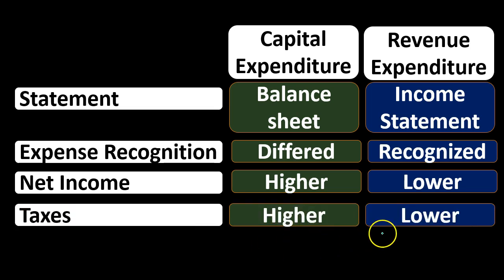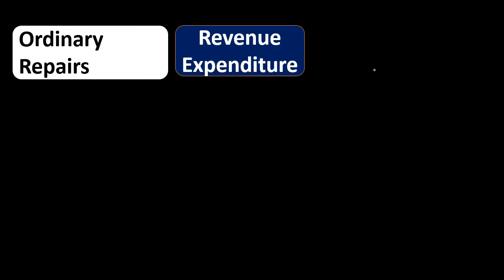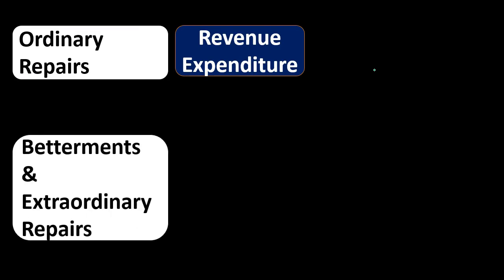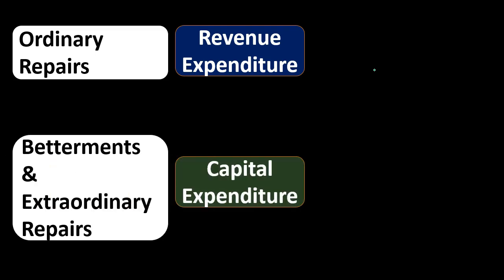The revenue expenditure results in lower taxes at the point in time the expenditure is made, because we are expensing it at the point it's made. This can run into tricky areas: is something a capital expenditure or can we just write it off as an expense during the current period? To look at that, we consider ordinary repairs — which are revenue expenditures — versus betterments and extraordinary repairs, which are capital expenditures.